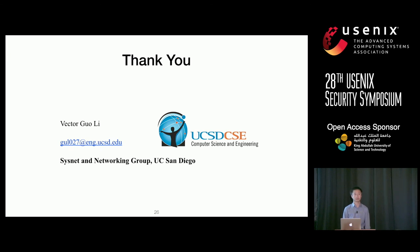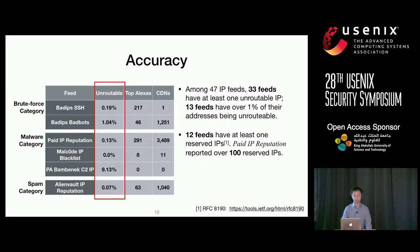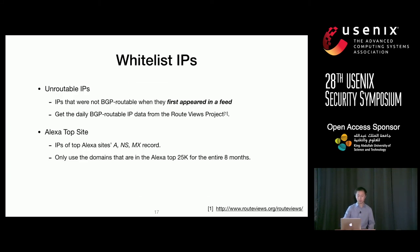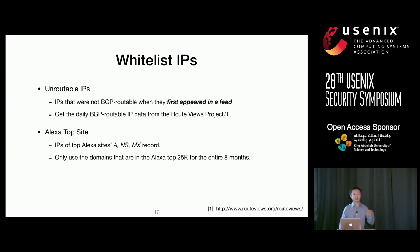Q: My name is Shibram from USC. With respect to your false positive estimates using Alexa, don't you think there might be cases where actually malicious websites get into the Alexa top 25k and get listed in the blacklist? A: Yes, it's possible that some are actually malicious, and it's hard to argue this is comprehensive. That's why we used domains that remained in the Alexa top list across the entire duration of our experiment — to ensure these are indeed popular sites. So even if a site is malicious, it is definitely a popular site, which minimizes the potential false positives introduced by this approach.